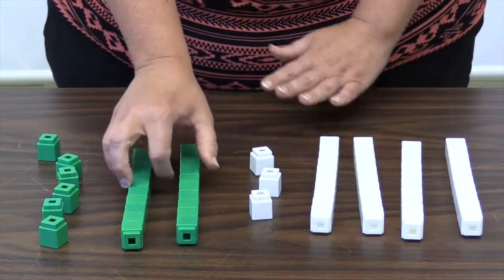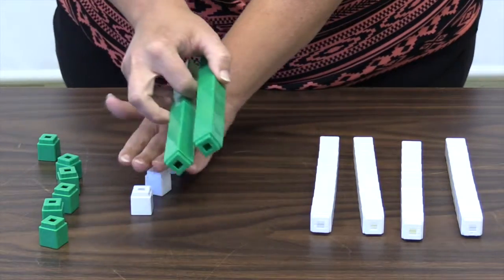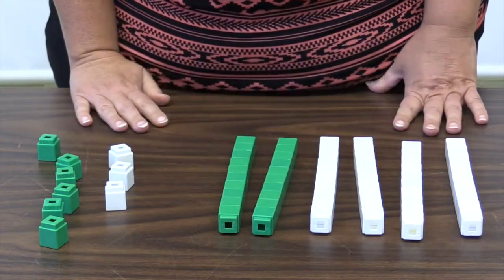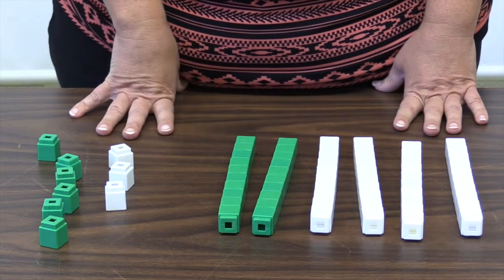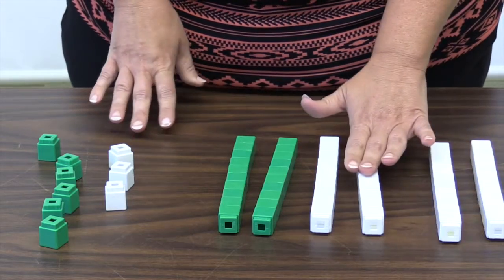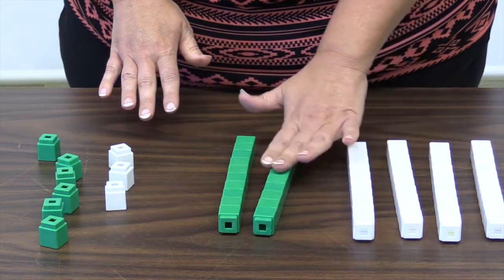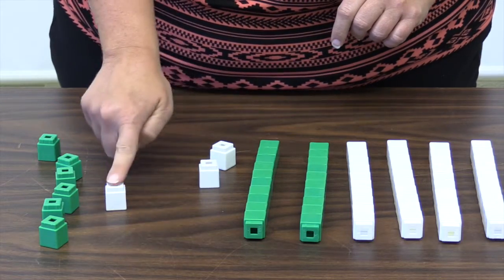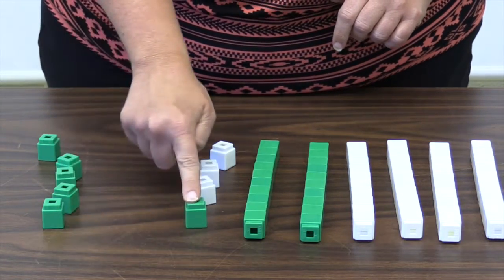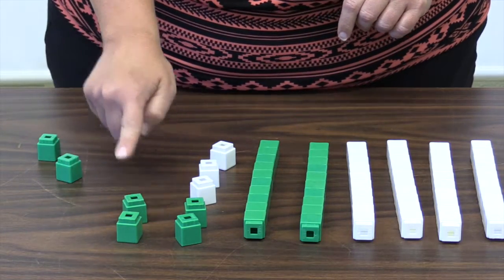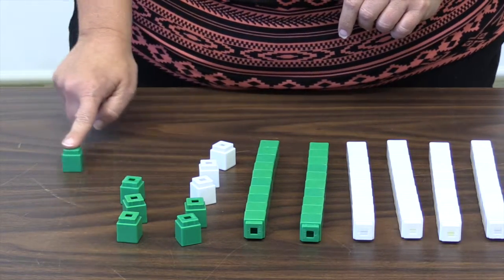Combine the numbers. Put the ones together and the tens together, and count by tens and ones to find the result. 10, 20, 30, 40, 50, 60, 61, 62, 63, 64, 65, 66, 67, 68, 69.